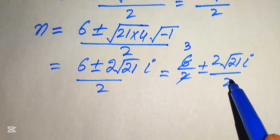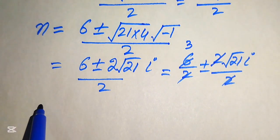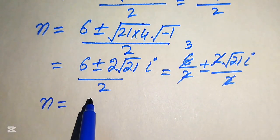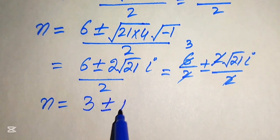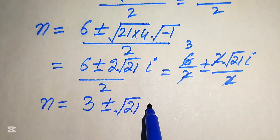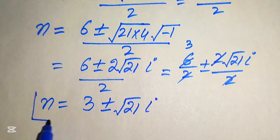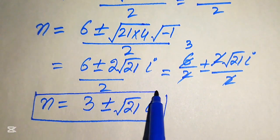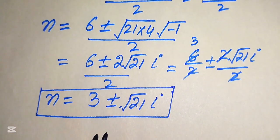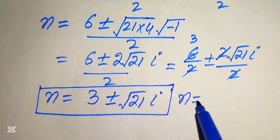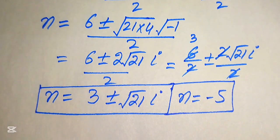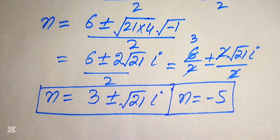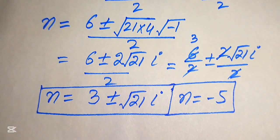Simplifying the fraction: 6 over 2 equals 3, and the 2 in the numerator cancels with the 2 in the denominator. So n equals 3 plus or minus square root of 21 times iota. These are the two complex roots. Combined with n equals minus 5, this is the final answer. Thank you for watching — please subscribe for more videos.